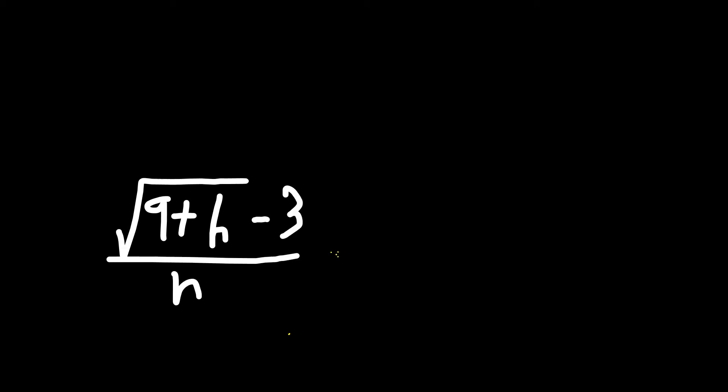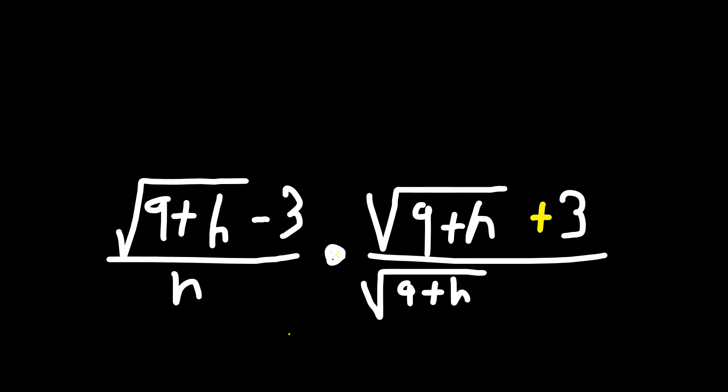So you're going to take the root of 9 plus h minus 3 over h, and you're going to multiply by the root of 9 plus h plus 3, not minus 3, notice the sign. You're going to have the root of 9 plus h and again plus 3, because this quantity is just a form of the number 1.